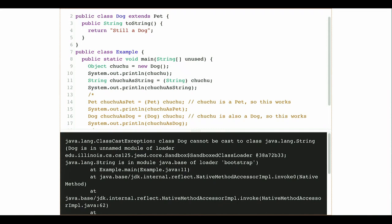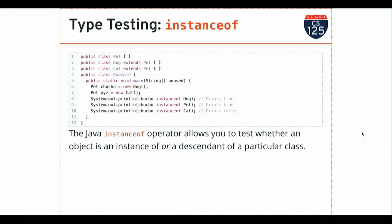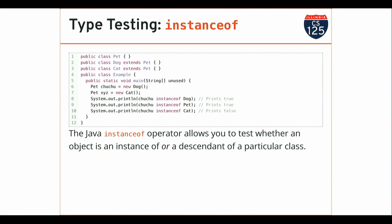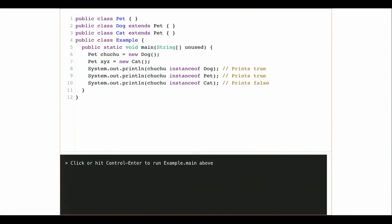These explicit downcasts are unsafe — that's why Java makes you use the explicit cast syntax. You take responsibility for the situation. If it turns out the object isn't actually related to the type you're casting to, you get an error. These inheritance relationships — visualizing the link between Pet, Dog, and Object, thinking about which ways they go — this is hard. You'll get more practice with it.